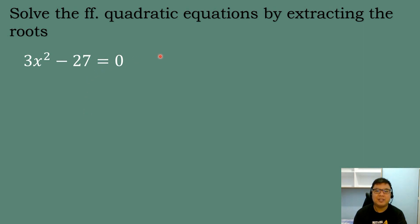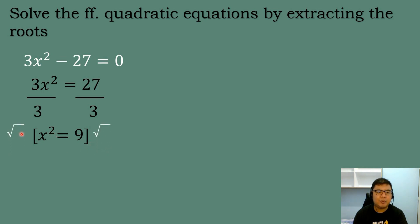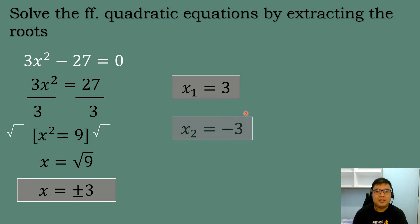Next: Solve 3x squared minus 27 equals 0. Transpose negative 27 to get 3x squared equals 27. Before applying the square root, divide both sides by 3 to cancel the numerical coefficient of the quadratic term. This gives x squared equals 9. Then multiply both sides by square root — squared and square root cancel — giving x equals square root of 9, which is positive or negative 3. So the two possible answers are positive 3 and negative 3.